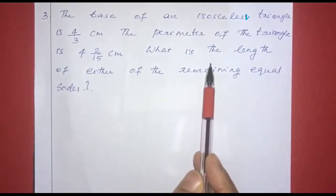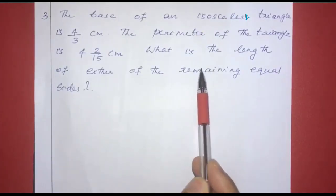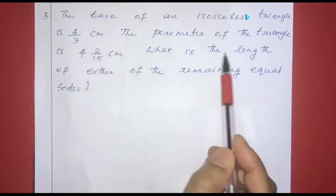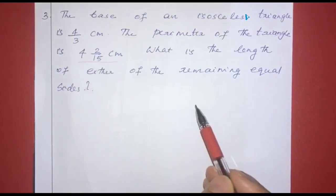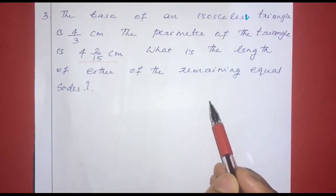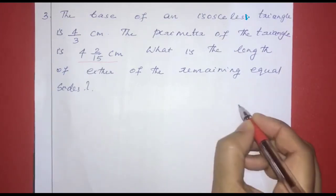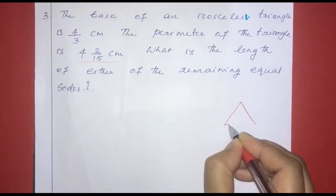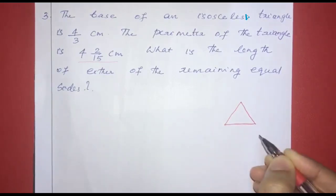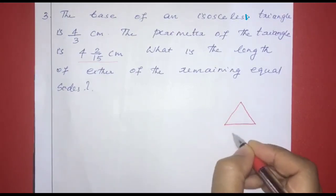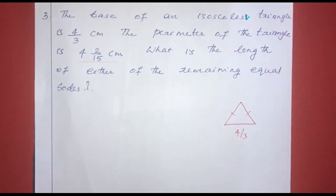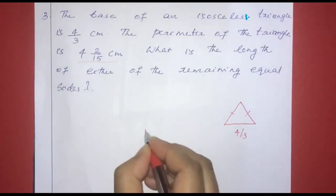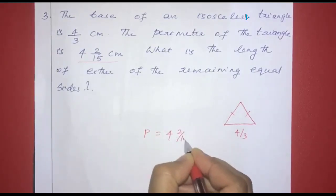Third question: the base of an isosceles triangle is 4/3 centimeters. The perimeter of the triangle is 4 and 2/15 centimeters. What is the length of either of the remaining equal sides?